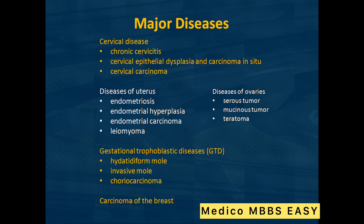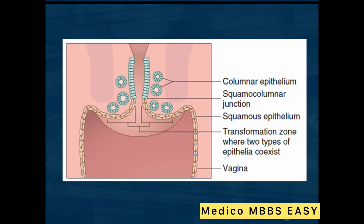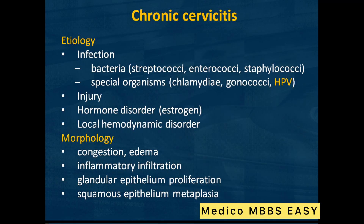Here is the columnar epithelium, squamocolumnar junction, and squamous epithelium — the transformation zone where two types of epithelia coexist — and the vagina. The etiology of infection includes bacteria such as streptococci, enterococci, staphylococcus, and special organisms including chlamydia, gonorrhea, and HPV.